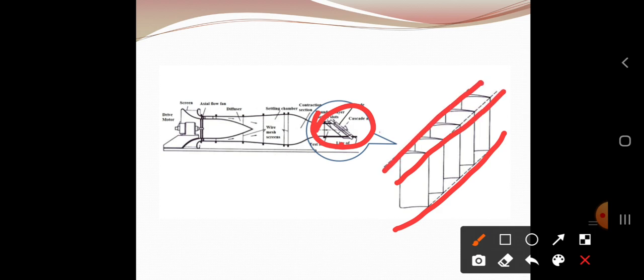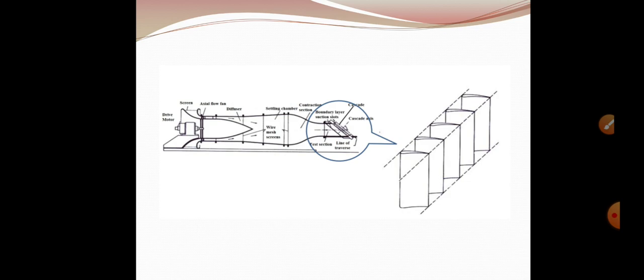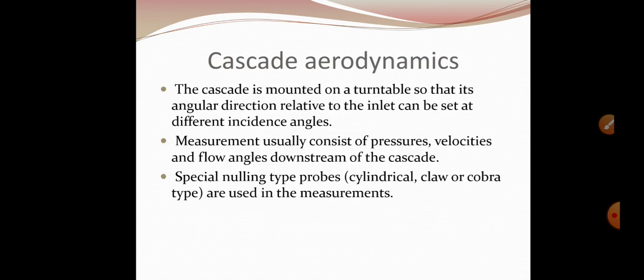Next we have nomenclature where I will be having chord and then series of blades which are arranged side by side with different incidence angles alpha and alpha one. The cascade is mounted on a turn table so that its angular direction relative to the inlet can be set at different incidence angles. Measurement usually consists of pressure, velocities, and flow angles downstream of the cascade. Special nulling type probes, those are cylindrical claw or cobra types, are used in the measurements.